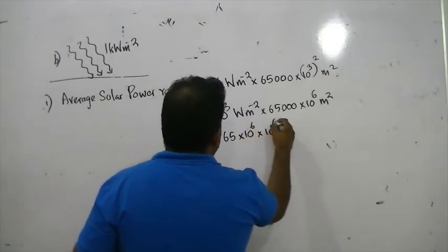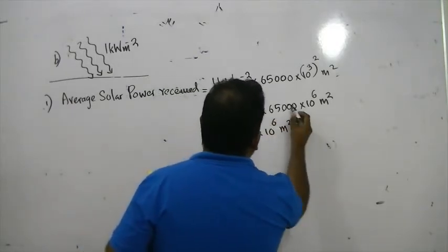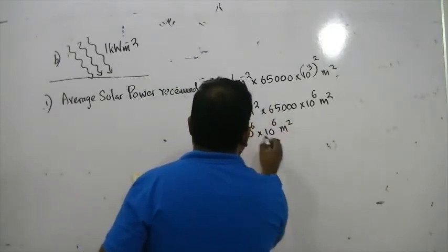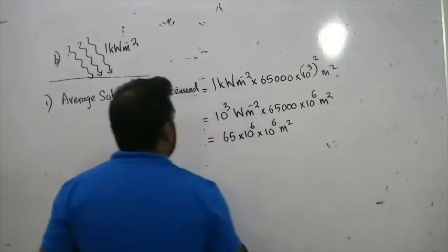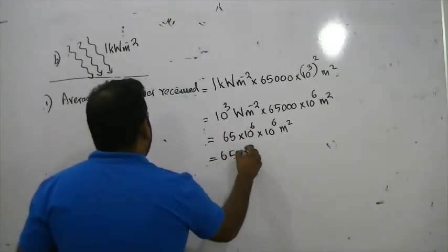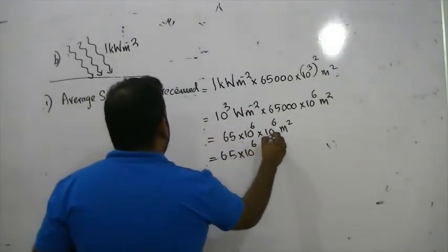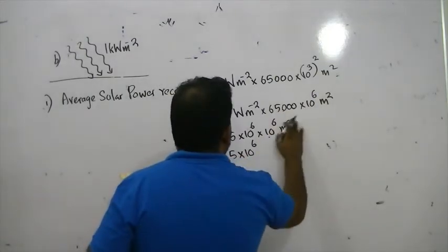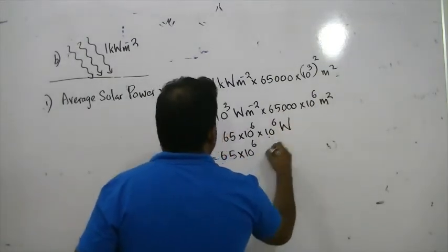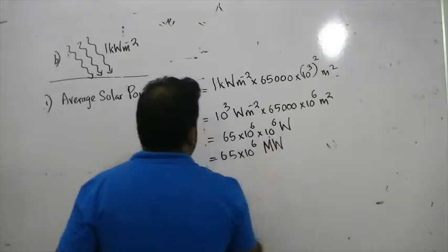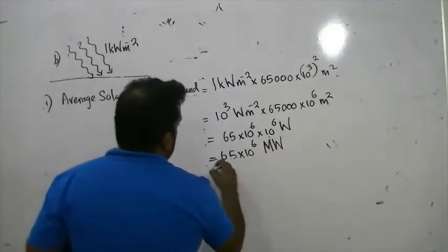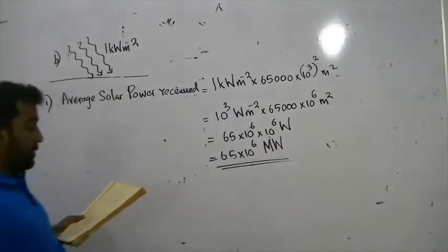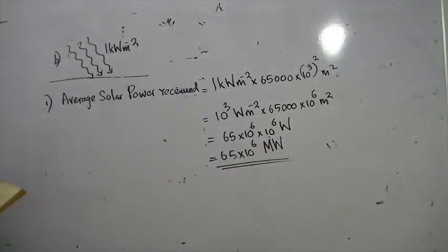Power = 1 kW/m² × 65,000 × 10⁶ m². The m² units cancel. The kW and 10⁶ combine to give Megawatts. So the answer is 65,000 Megawatts, or 6.5 × 10⁴ MW.